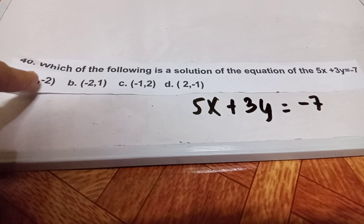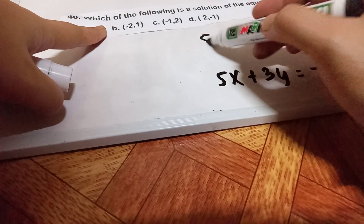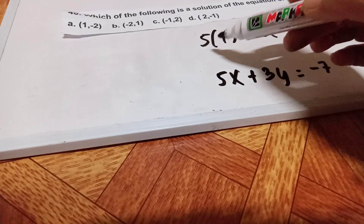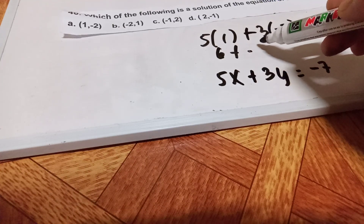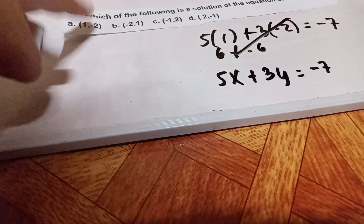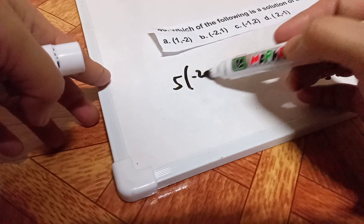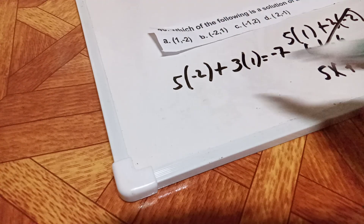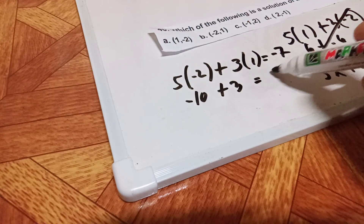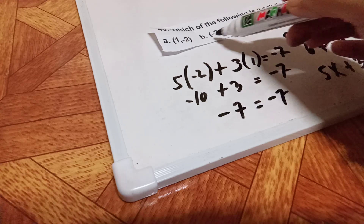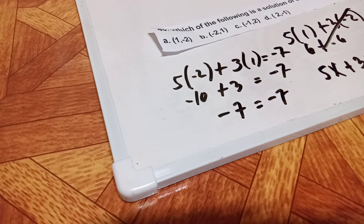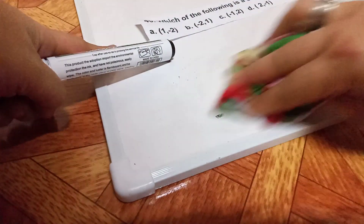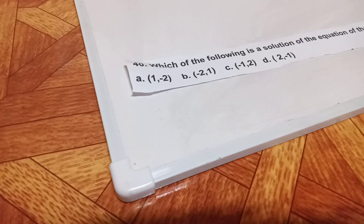All you have to do is substitute the answer choices as x and y. Try x equals 1, y equals negative 2: 5 times 1 plus 3 times negative 2 gives 5 minus 6, which is negative 1 — not negative 7. Try x equals negative 2, y equals 1: 5 times negative 2 plus 3 times 1 gives negative 10 plus 3, which is negative 7. Yes! The answer is letter B. That is the easiest way — substitute all answer choices.